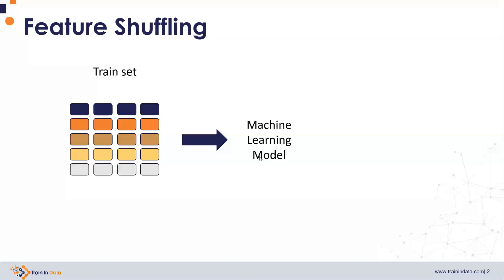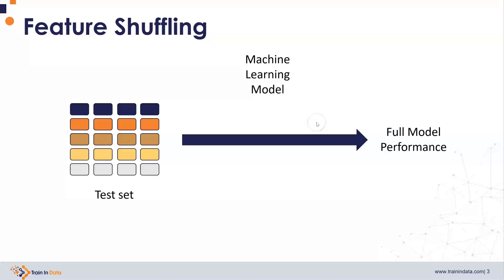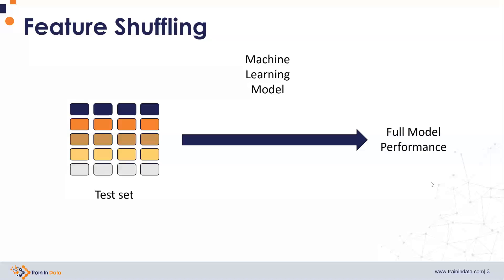I'm going to come back to this point later on in this section. But for now, let's focus on the mechanism. We take a test set or a held-out sample, and utilizing this machine learning model, we obtain a set of predictions. And using a metric of our choosing, we obtain what is called the performance of this model on the test set.